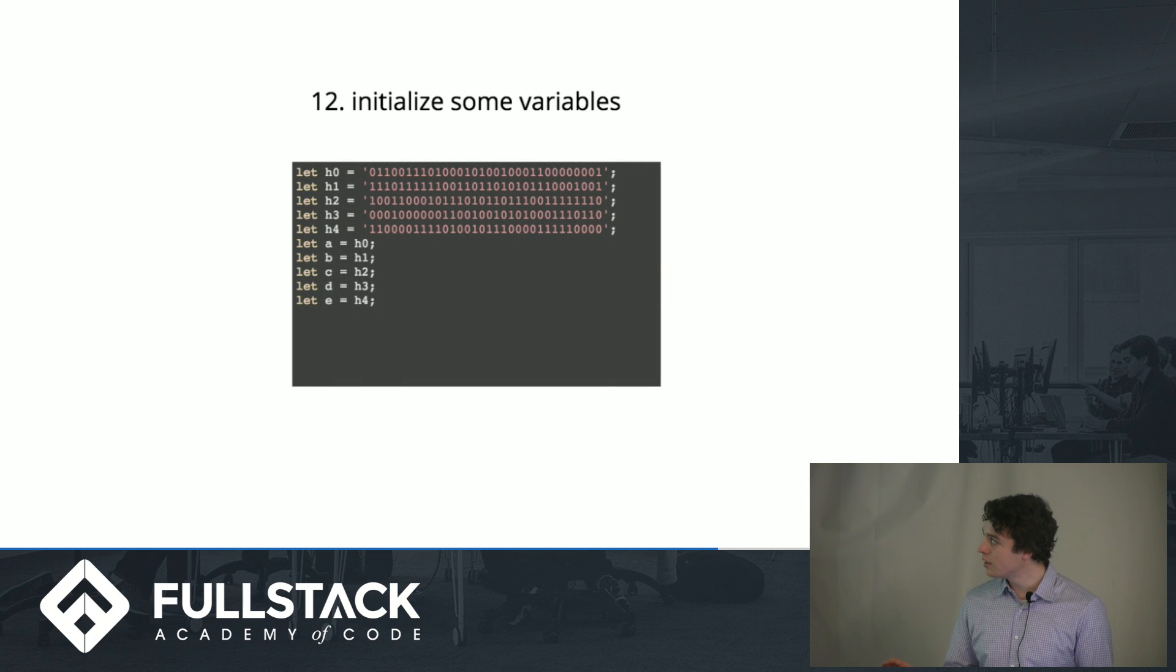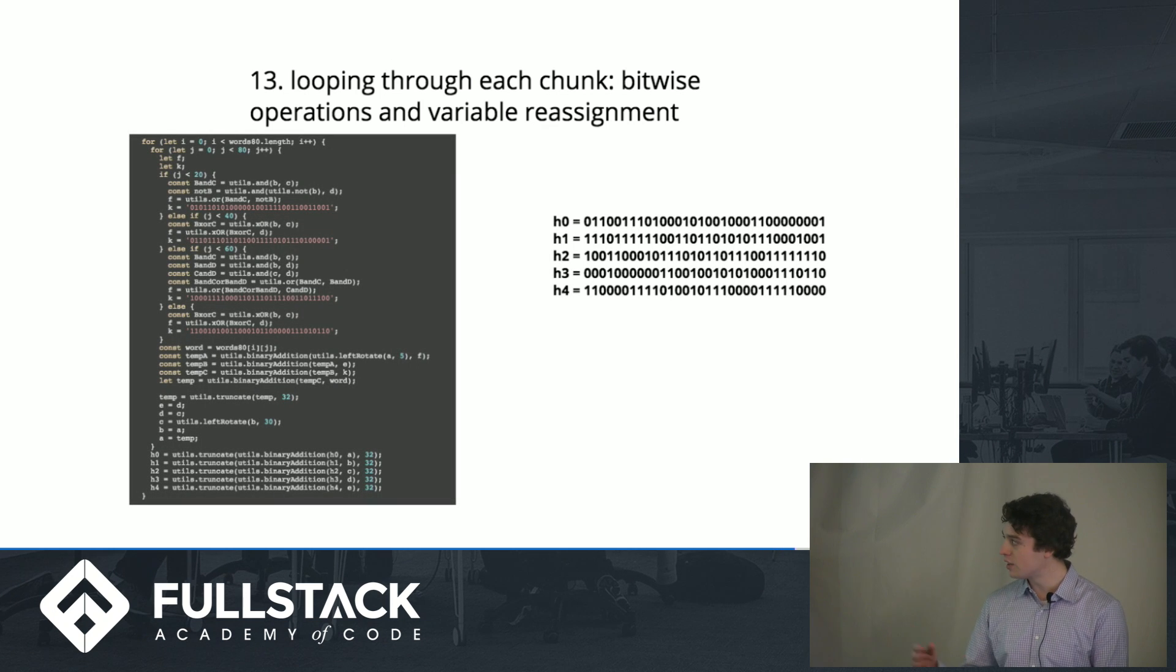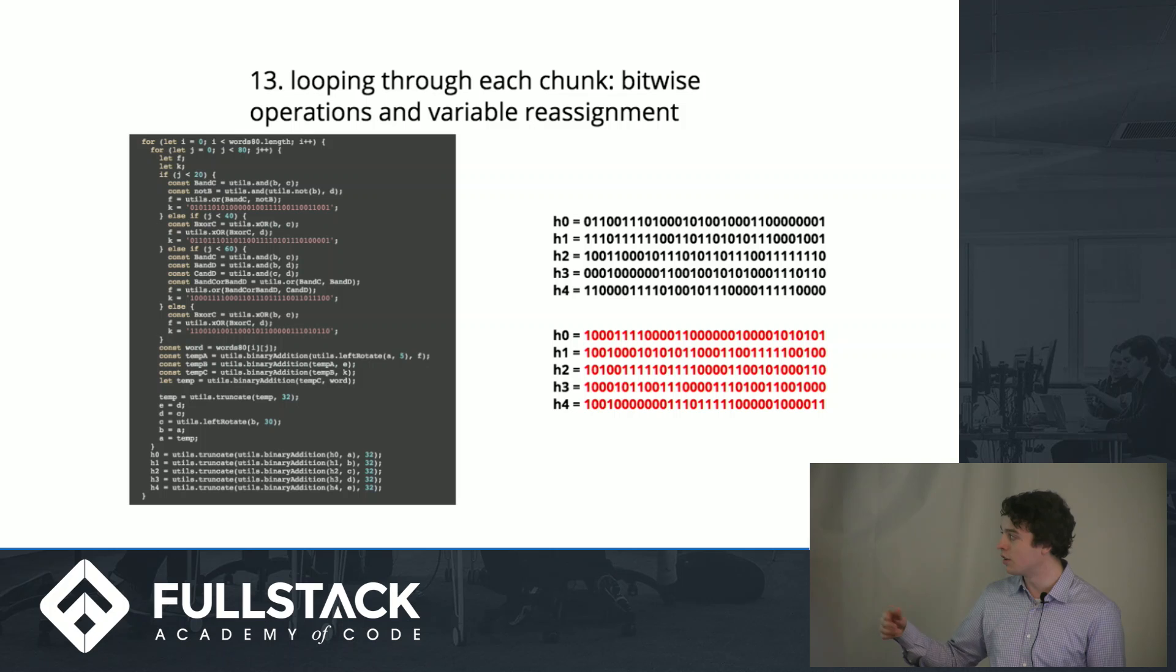Now we're going to initialize some constants, and this is the meat of the function. Basically you just loop through all these chunks we've created and use bitwise operations and variable reassignment on these constants from the previous function to continually reassign these five variables with different values that are the result of bitwise operations. This is why it's always a uniform length output—no matter how long your input, you're only manipulating these five variables. It's just how much are you manipulating them.